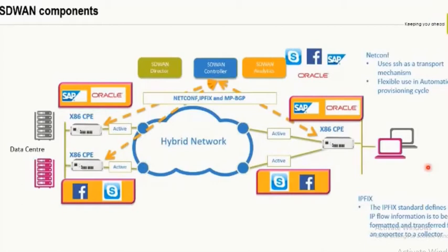The spoke location is not sending data traffic to the controller — it sends it directly to the data center. The controller is only for relaying intelligent information: it relays IPsec parameters to establish between the DC and the spoke, and what applications are being browsed. That data is collected using the IPfix protocol and sent to analytics.